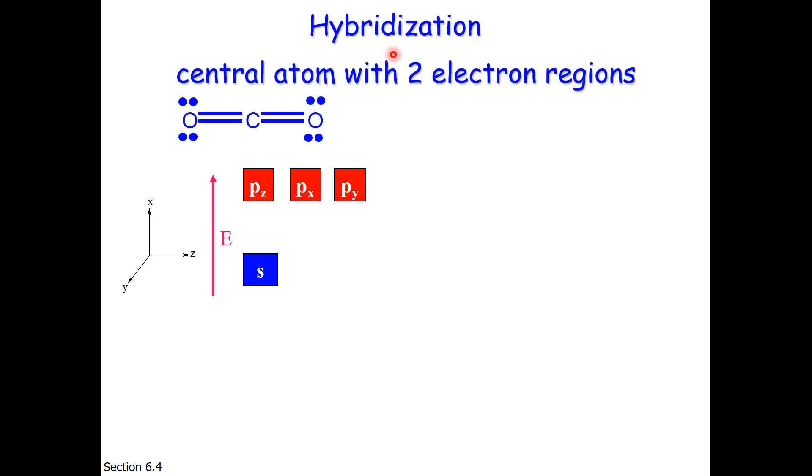The word hybrid means a mixture. For example, a hybrid car uses both gasoline and electric power. What we're going to do here is mix orbitals. Now we will do this pictorially. This can be done mathematically as well, using the equation the Schrödinger model uses to model these electron clouds. We'll start with a central atom, this carbon atom, that has two electron regions around it.